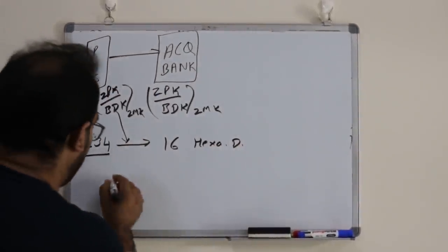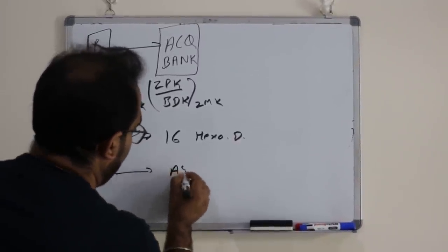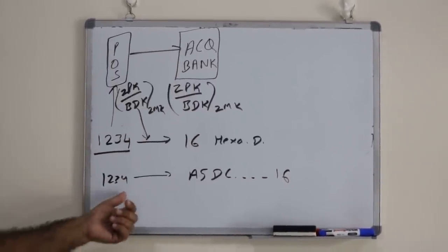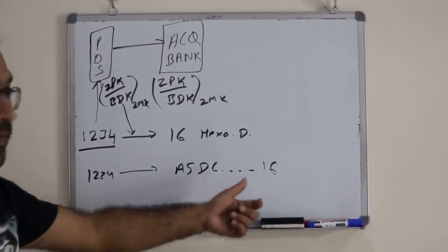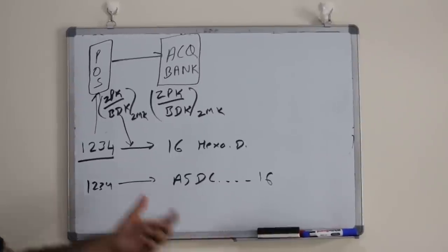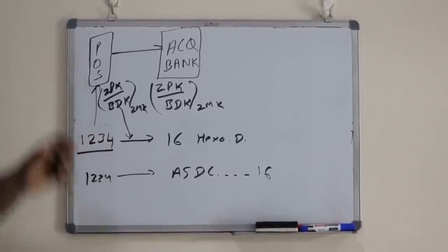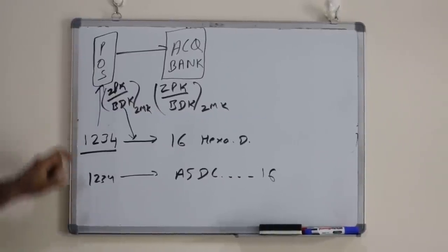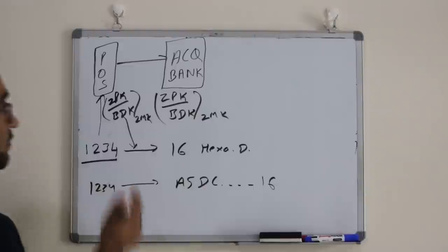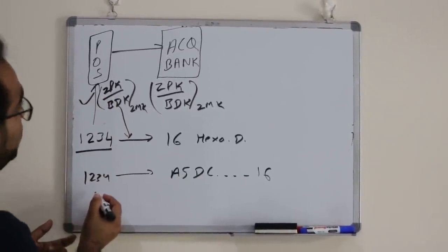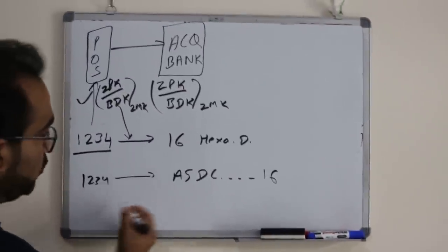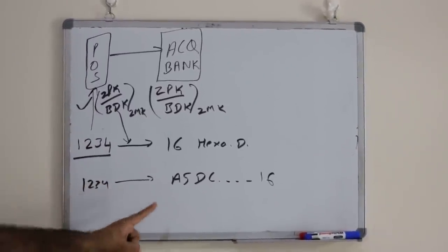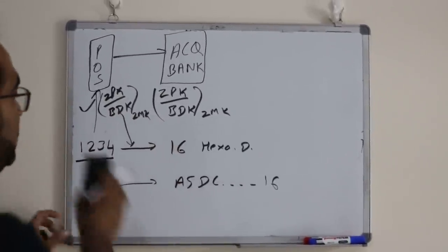A key pair has been shared and exchanged between the POS and acquirer. When you enter your PIN, this POS device will apply some algorithm and translate it to a 16-digit hexadecimal number. For example, 1-2-3-4 will become something like A5DC, up to 16 digits. So you entered 1-2-3-4 but it has been changed to some other value — this is the safety of your PIN. The acquiring bank will receive this 16-digit hexadecimal value instead of the clear PIN.